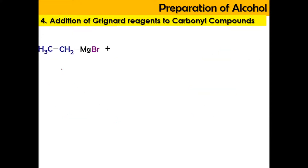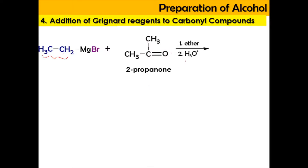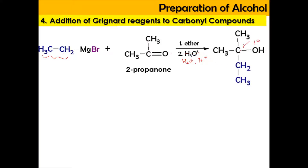Similarly, if you have a Grignard reagent — a longer one — and react it with a ketone such as propan-2-one, the CH₂CH₃ group is inserted and the double bond O becomes OH. This happens in ether solvent followed by hydrolysis, and produces a tertiary alcohol because the carbon bearing OH is attached to three alkyl groups. The product is 2-methyl-2-butanol.